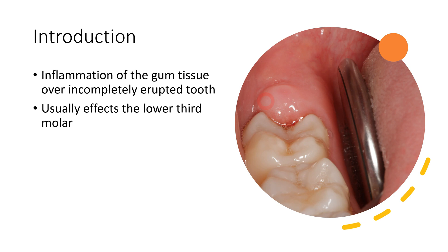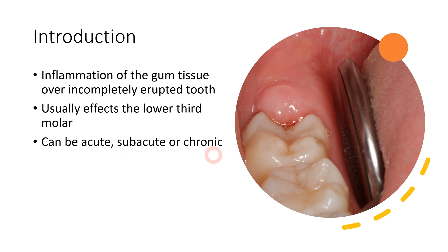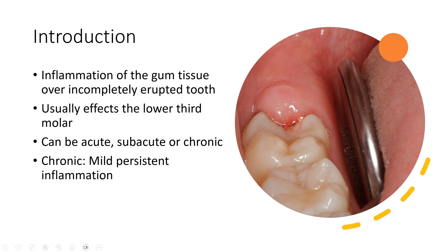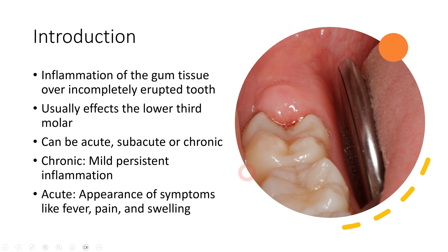Pericoronitis mainly affects the lower third molar, which is impacted in most cases. There are different phases: acute, subacute, and chronic. Chronic condition occurs when there have been multiple episodes of pericoronitis with no treatment. Chronic cases are usually mild — just some erythema and minor bleeding. Acute pericoronitis is typically the first episode, leading to systemic complications including fever, pain, and swelling of the operculum.